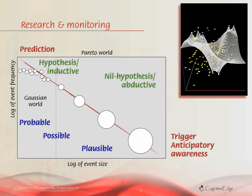You can actually see the patterns of emergent potentiality opening up. You can assess which are the most plausible, and you can either seek to prevent or seek to exploit the things which happen as a result.